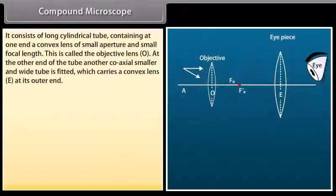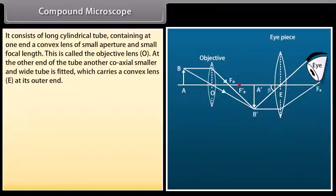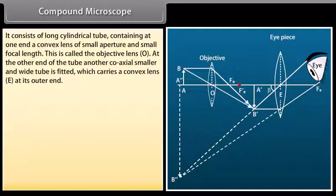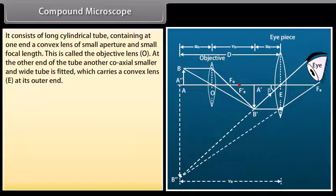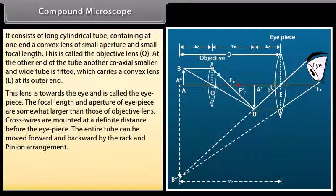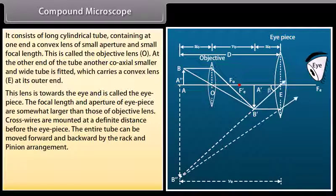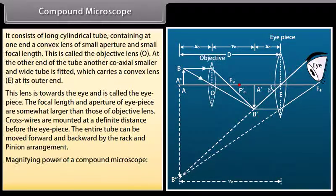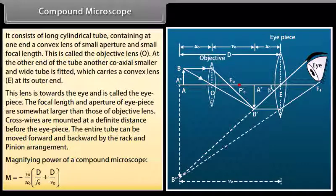Compound microscope. It consists of a long cylindrical tube with a convex lens of small aperture and small focal length at one end — the objective lens O. At the other end, a coaxial smaller tube carries a convex lens E called the eyepiece, with somewhat larger focal length and aperture. Cross wires are mounted at a definite distance before the eyepiece, and the entire tube can be moved by a rack and pinion arrangement. The magnifying power is M = −(V₀/U₀) × (D/F_E + D/V_E).